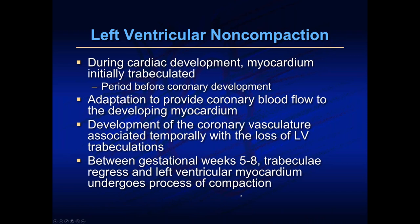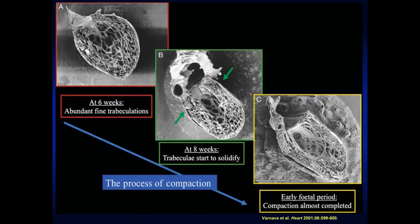During cardiac development, the myocardium is initially very trabeculated — there are many finger-like projections in all babies developing in utero. This is a period just before coronary development, providing extra blood flow to the developing heart muscle. The development of coronary vasculature is associated with the loss of these trabeculations. Between gestational ages of about five to eight weeks, these trabeculae regress — they fold together and compact — and that's what happens in a normal heart. When that doesn't happen, that's left ventricular non-compaction.